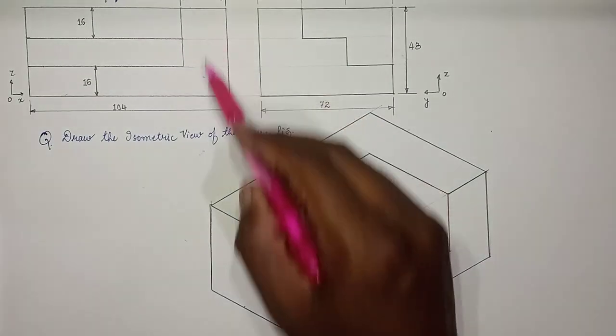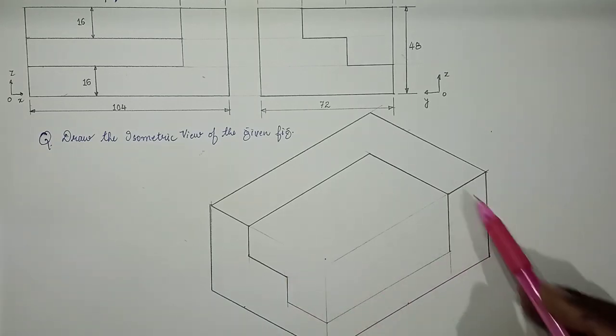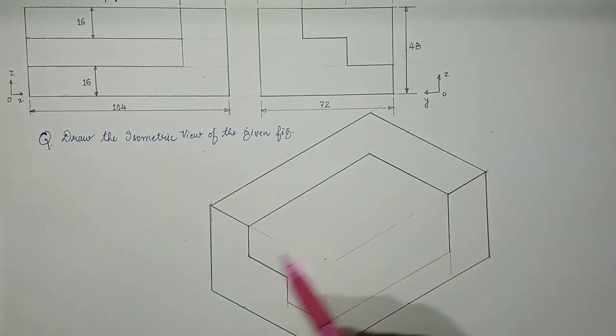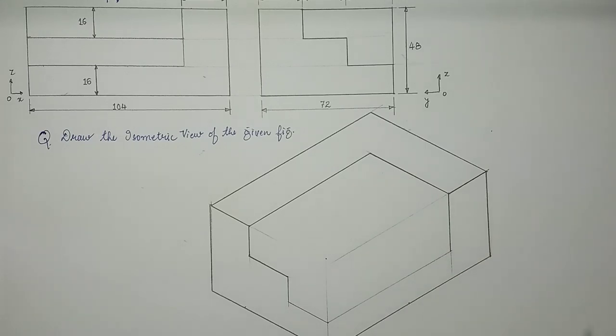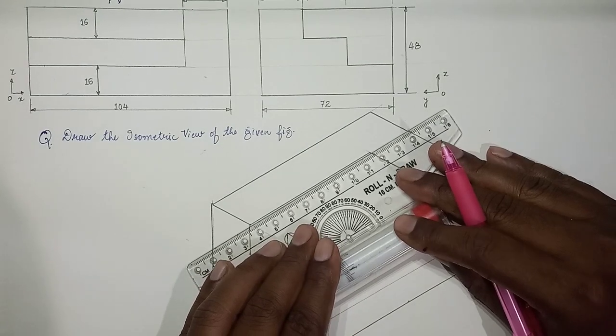So we try and draw lines parallel to x-axis of length 80. So initially let them be construction lines.